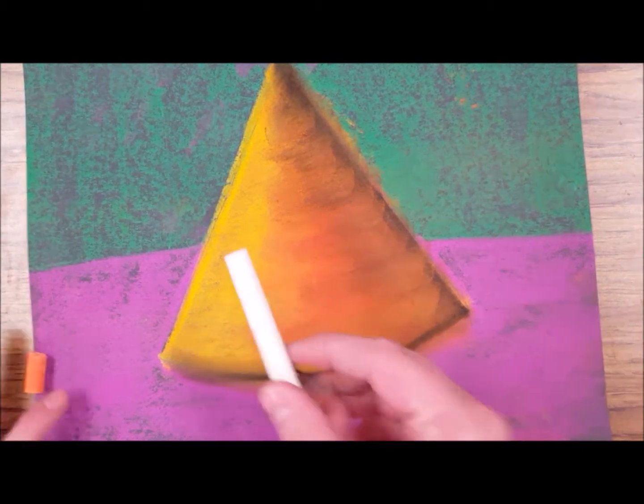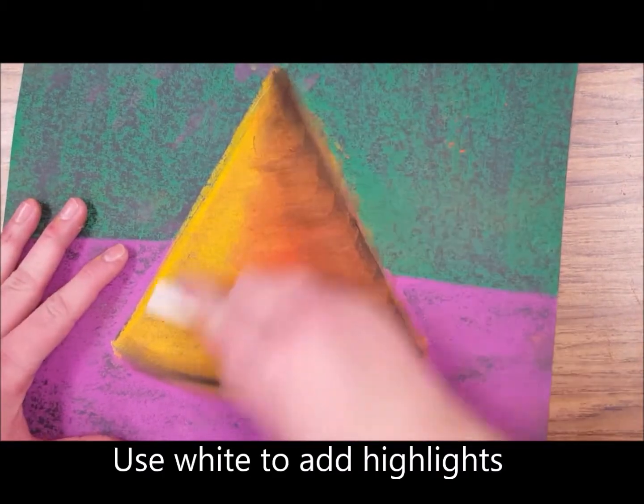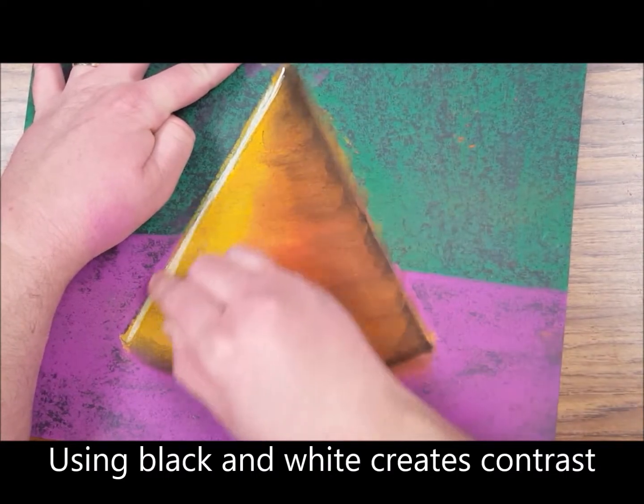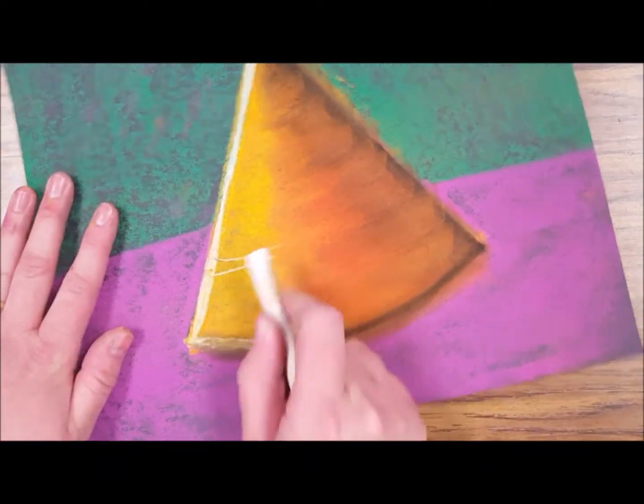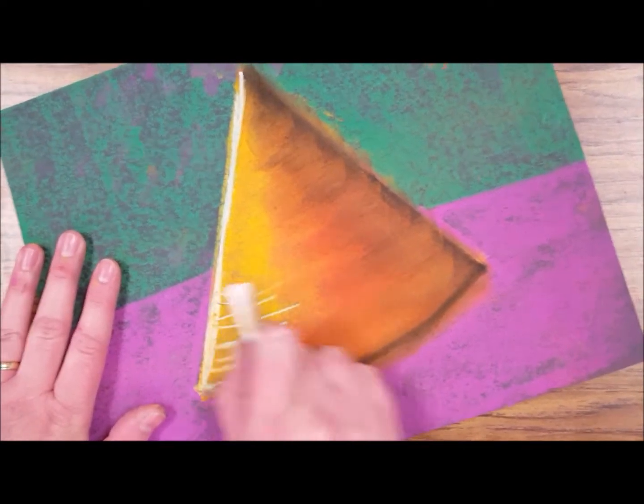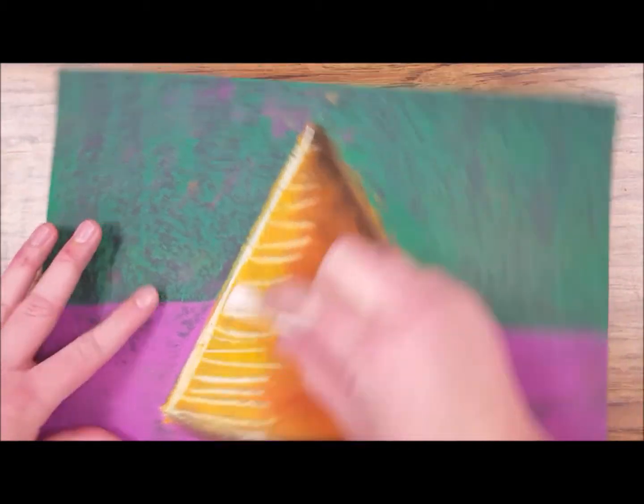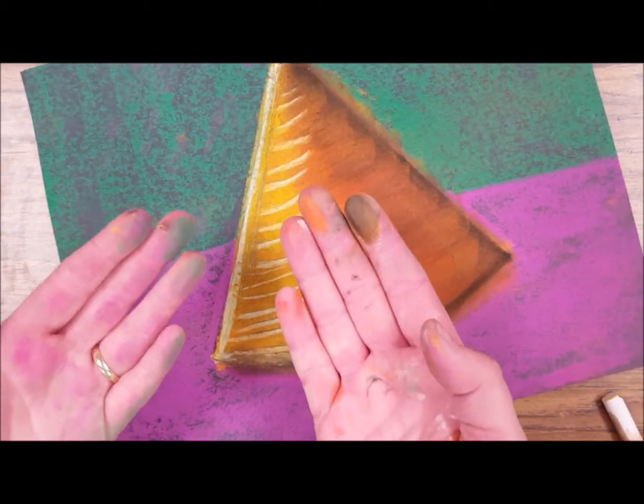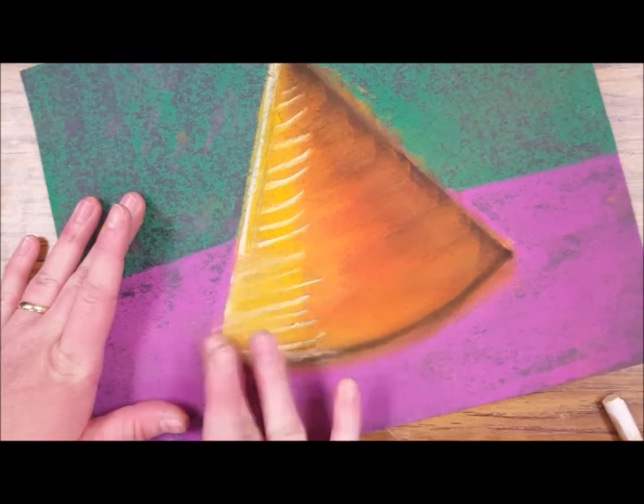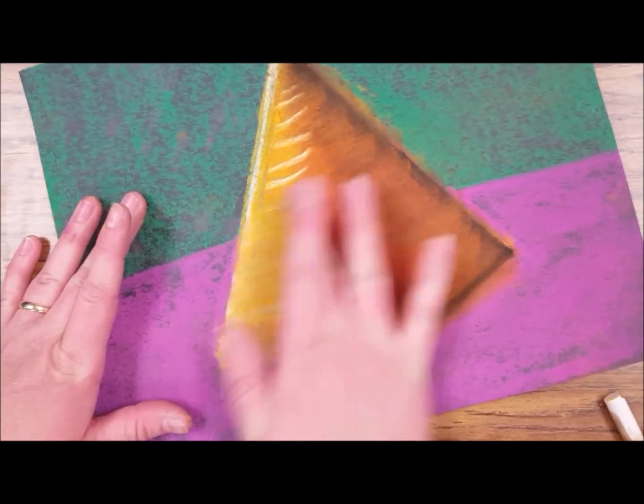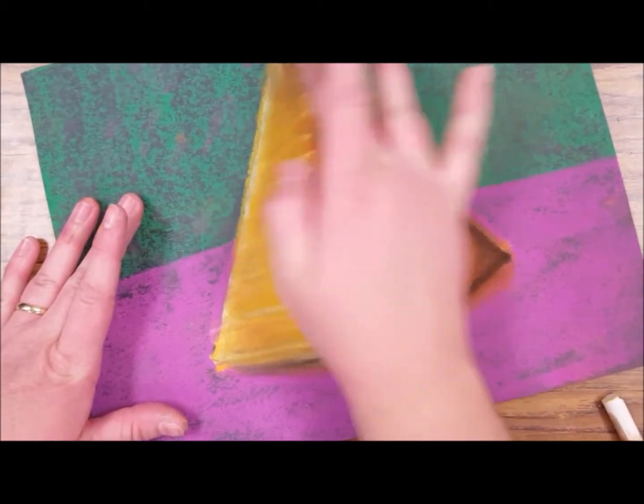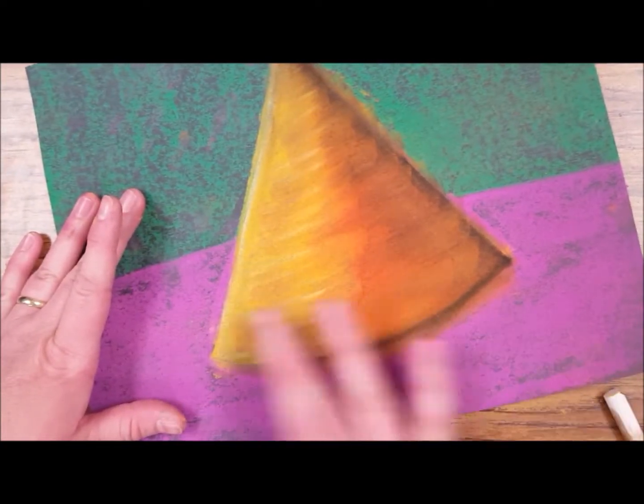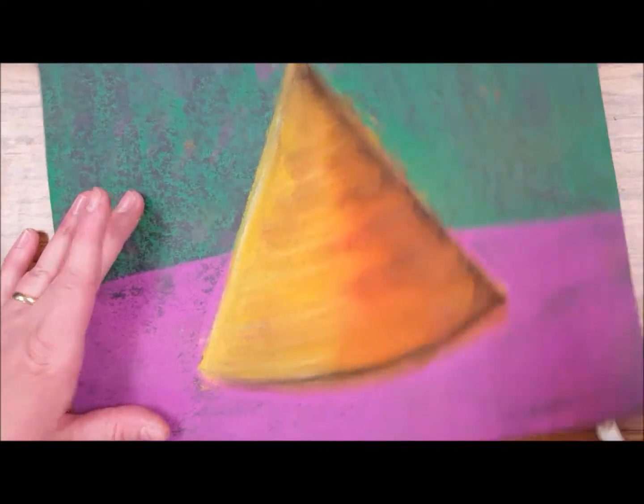I'm also going to take white and I'm going to add a highlight. I'm going to actually take the white and add a little bit more of a highlight in here. I'm going to try and find a clean finger because as you can see it gets pretty messy.